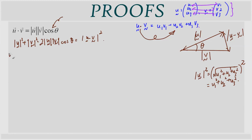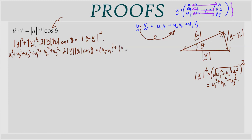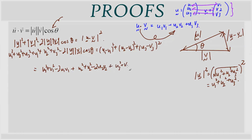Upon simplification, the left-hand side gives: u1² + u2² + u3² + v1² + v2² + v3² − 2|u||v|cosθ. I'm leaving |u| and |v| in that form because it looks like the final product. On the right-hand side, expanding |u−v|² gives: (u1−v1)² + (u2−v2)² + (u3−v3)². Expanding further: u1² + v1² − 2u1v1 + u2² + v2² − 2u2v2 + u3² + v3² − 2u3v3.